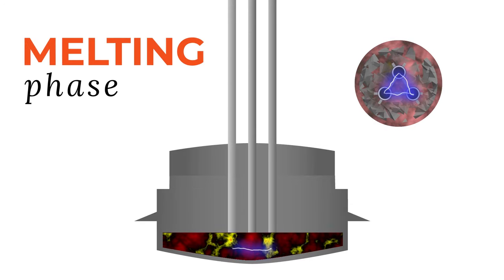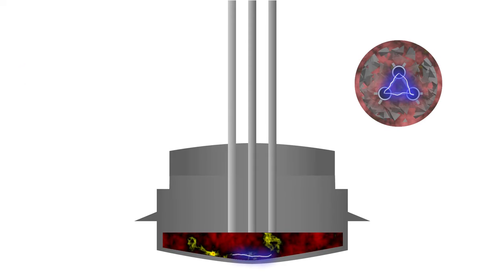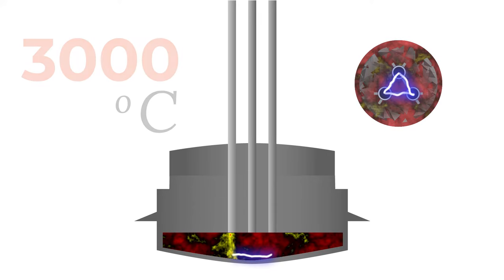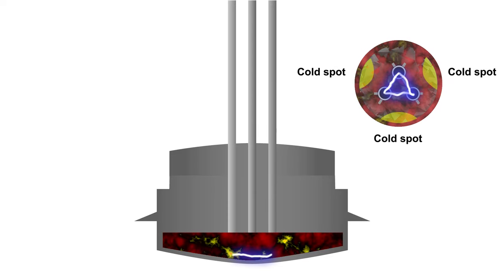The electrodes are lowered further into the furnace to maximum depth and the voltage is increased. Arc temperature can reach up to 3000 degrees centigrade and melting continues. Alternating current can lead to cold spots around the furnace, especially between the electrodes at the perimeter of the furnace.